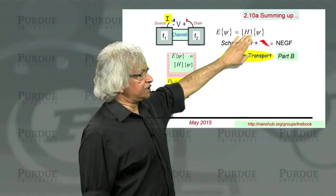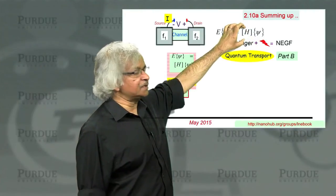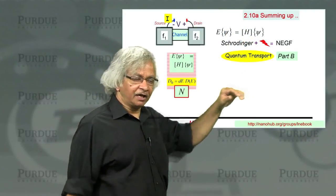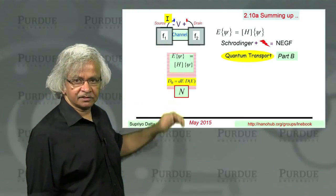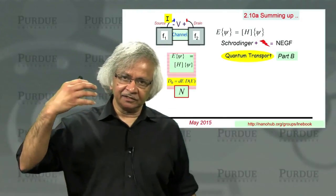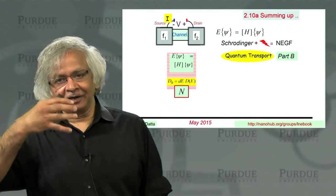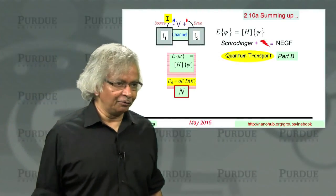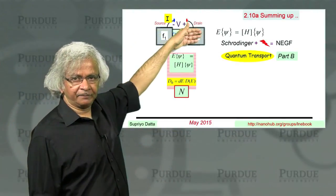E psi equals H psi, where H is this matrix whose eigenvalues give you the energy levels that define this electronic highway, the highway along which electrons flow from source to drain.